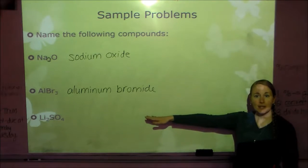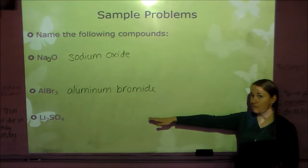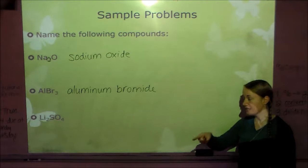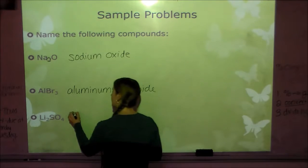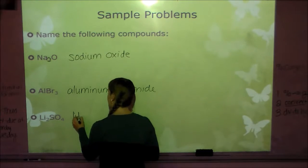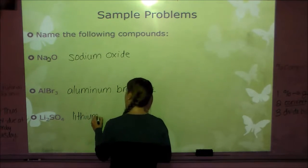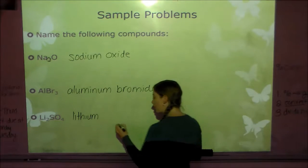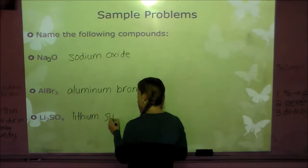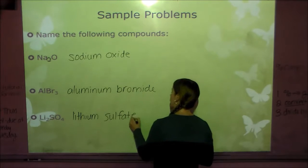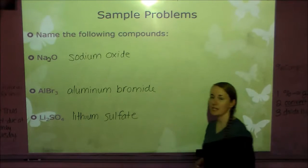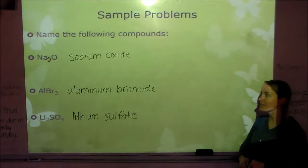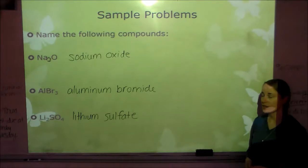Next we have one with a polyatomic ion. Li is lithium, and SO₄ is on your chart — it is sulfate. Notice I did not change the ending. It's lithium sulfate, and it remains just as it is on your polyatomic ion sheet.